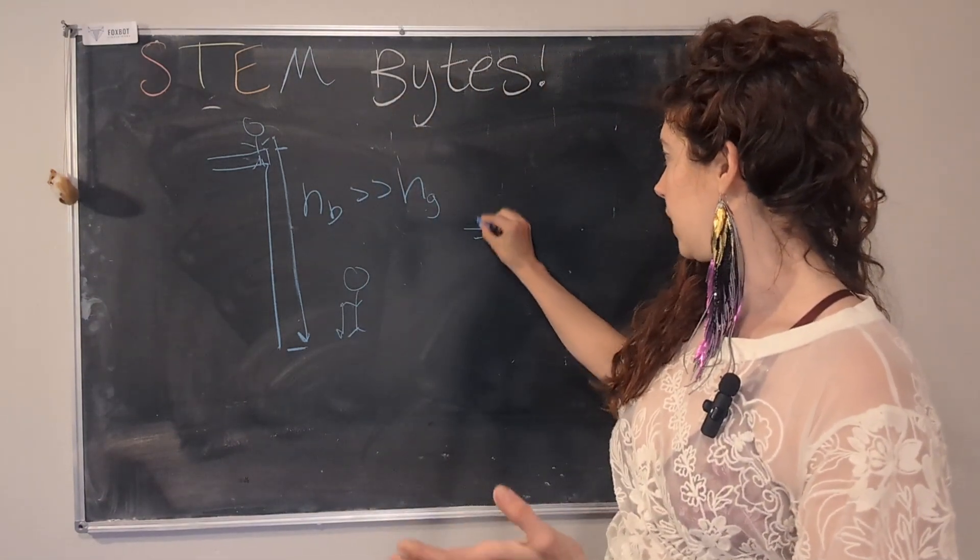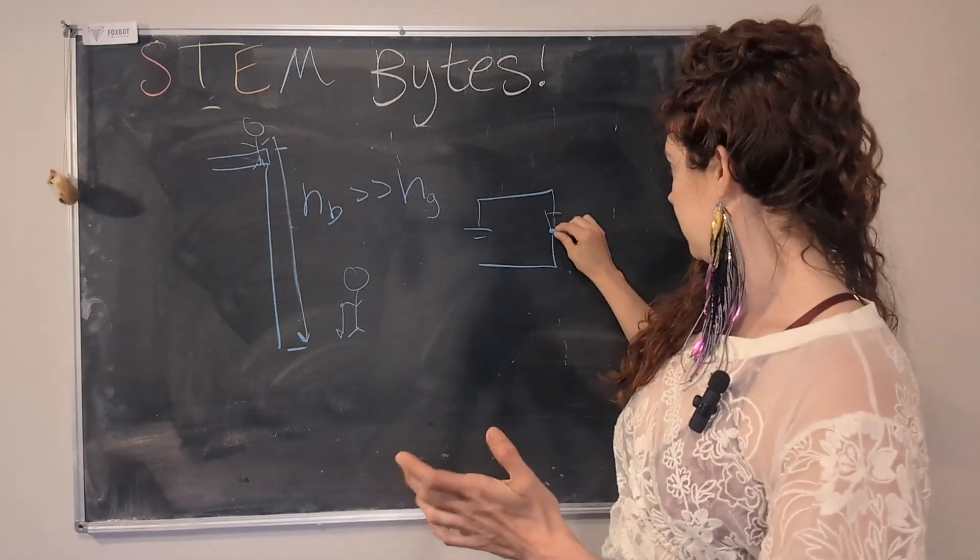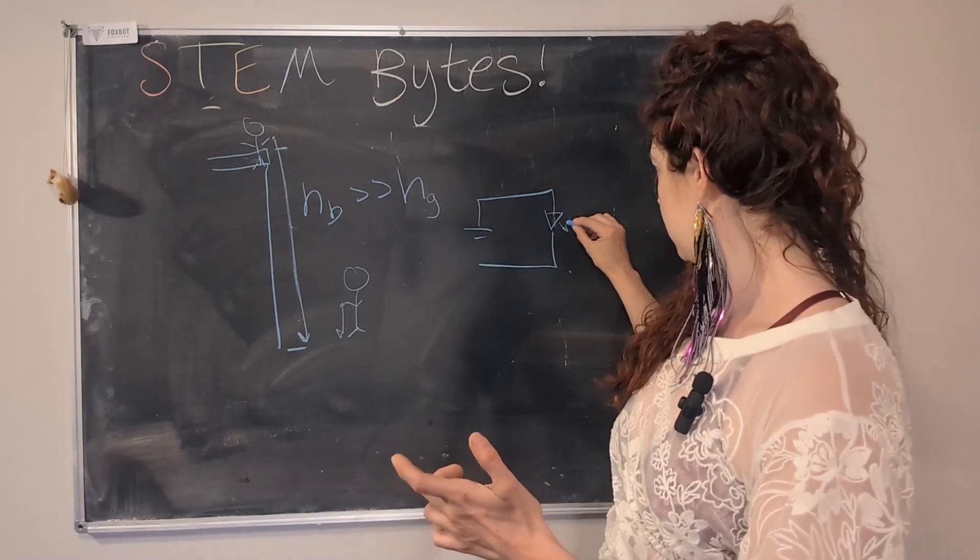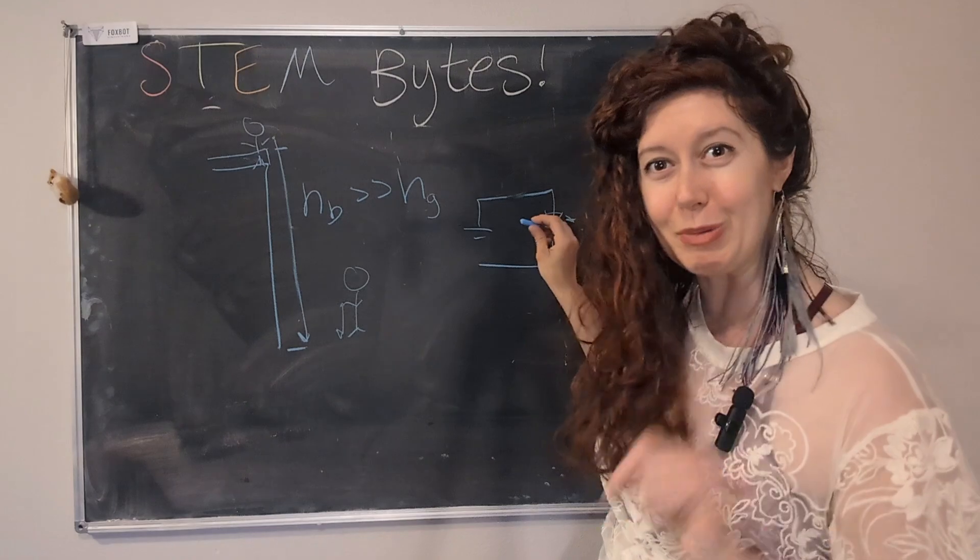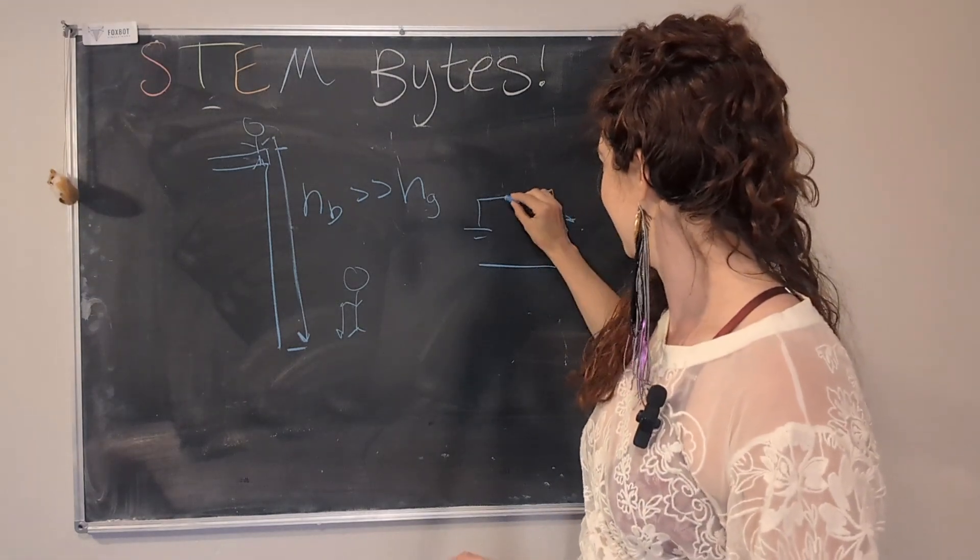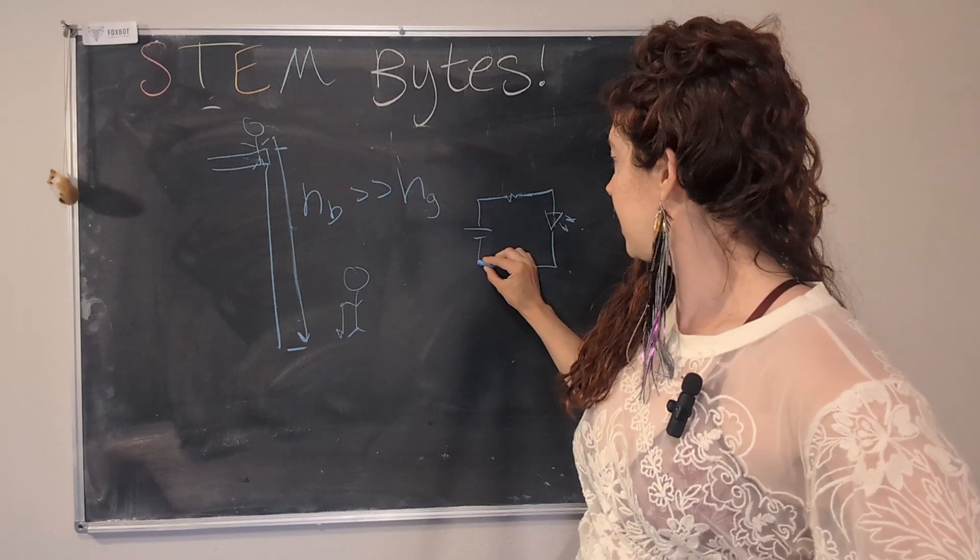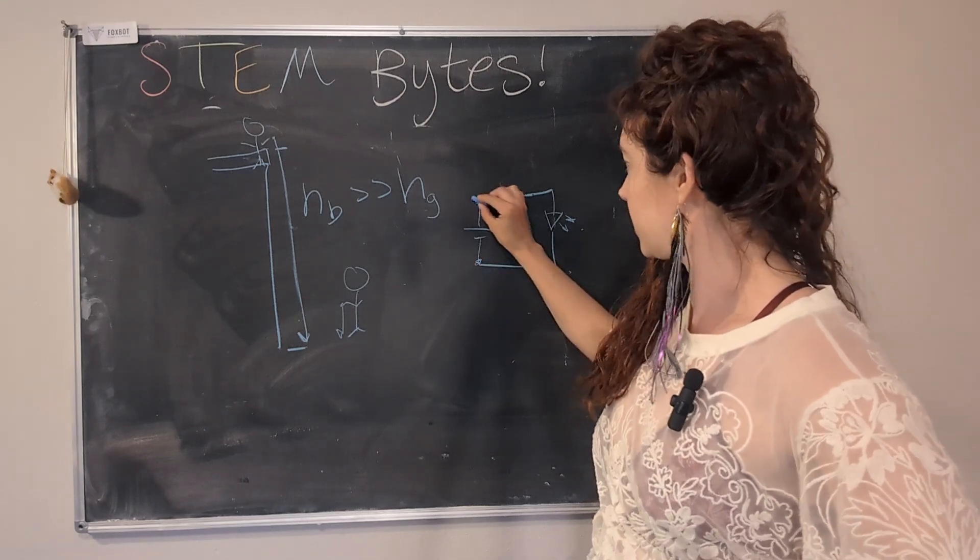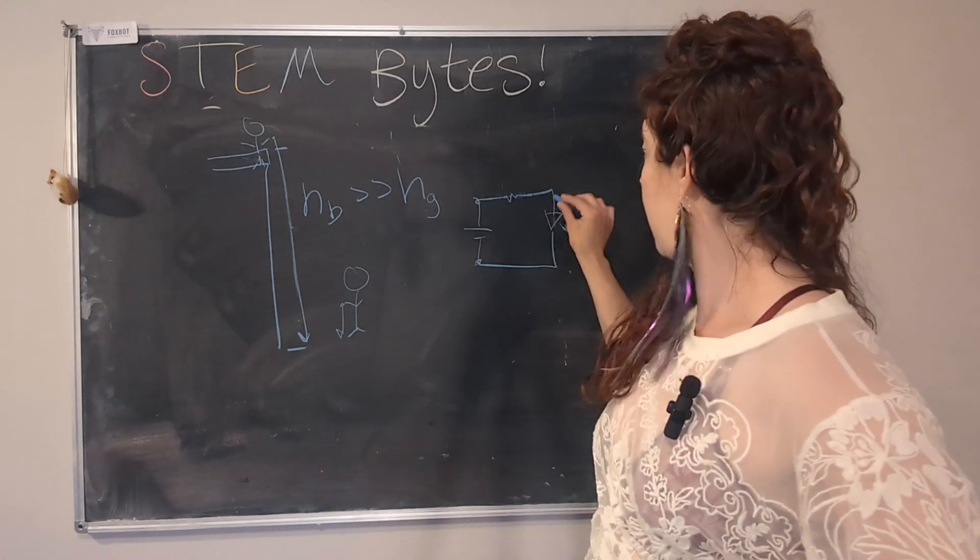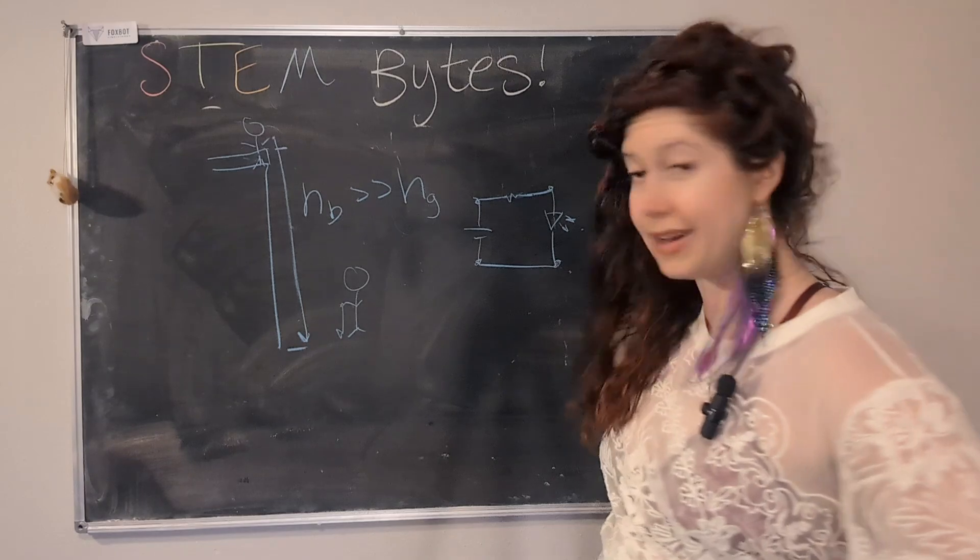We'll give our circuit an LED and maybe a resistor, because you should always put a resistor in with an LED. So you would always measure the voltage between two points: across the battery, across the resistor, or across the LED.